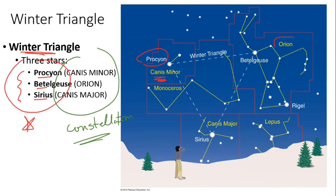Over here we have everybody's favorite constellation, Orion, with the bright star Betelgeuse. And over here we have the big dog, Canis Major. Sirius is actually the brightest star visible in the nighttime sky. Its brightness could be a combination of it pumping out a lot of energy and also being relatively close to us — proximity and energy output give it what we call apparent brightness. But there's the Winter Triangle.